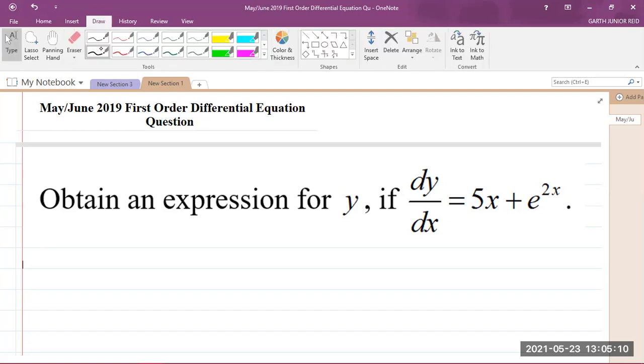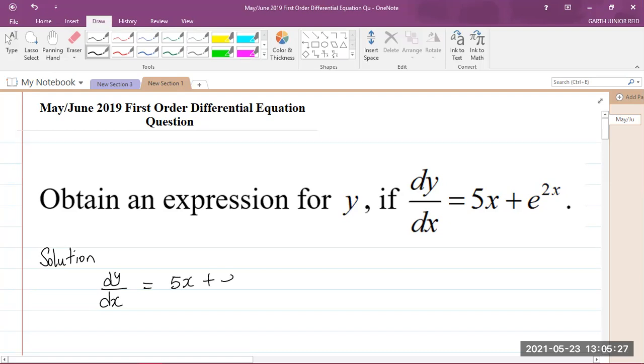Let me write our solution here. We are given dy/dx is equal to 5x plus e to the power of 2x. Now I can separate the dy by dx like this: 1 over dx times dy. So if I can do that, then I could write this equation as dy equals (5x plus e to the 2x) times dx.